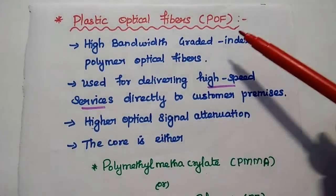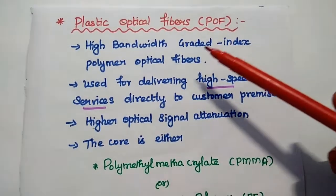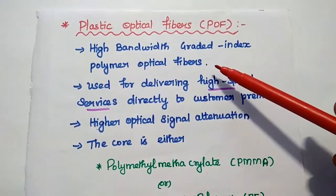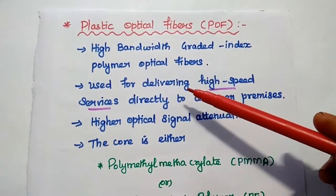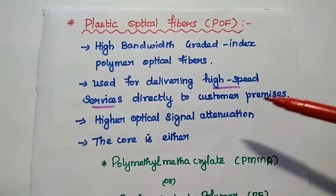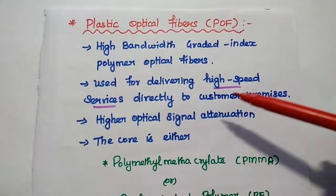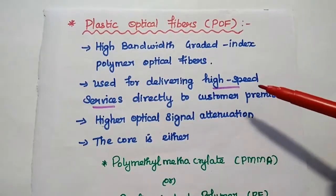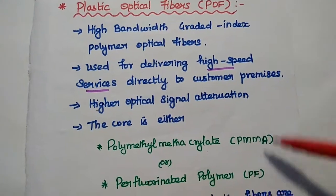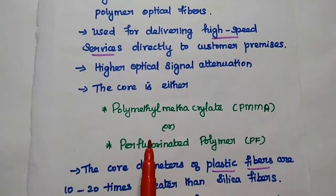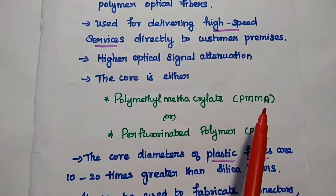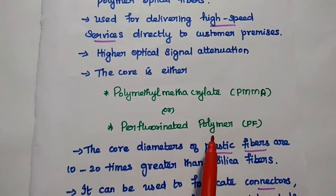The next one is plastic optical fibers. The plastic optical fibers are high bandwidth graded index polymer optical fibers. So these polymer optical fibers are widely used for delivering high speed services directly to the customer premises. For example, high speed internet service can be accessible through this optical fiber. It has higher optical signal attenuation. So in this polymer optical fibers, the core can be either polymethyl methacrylate, simply PMMA or perfluorinated polymer that is PF.